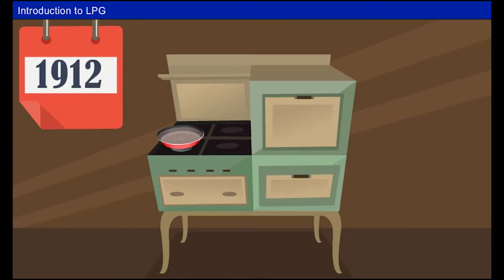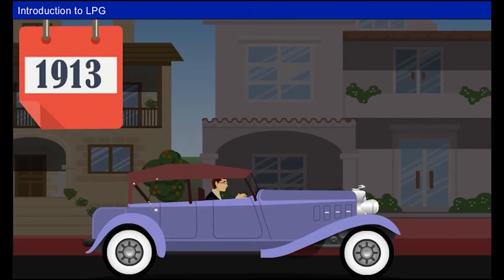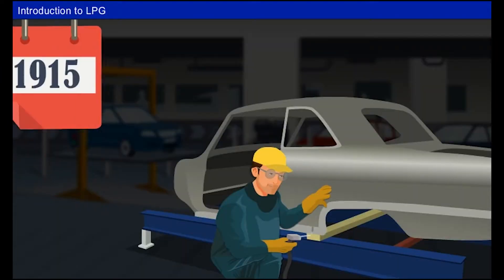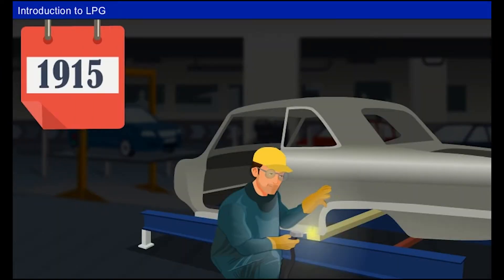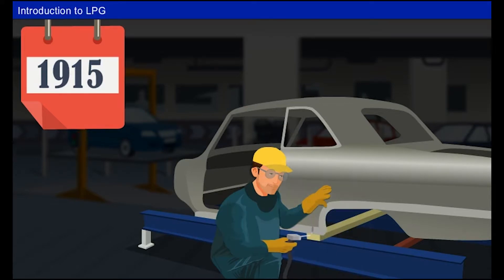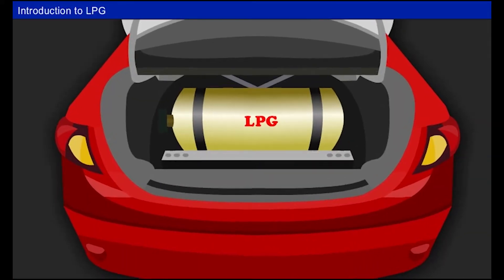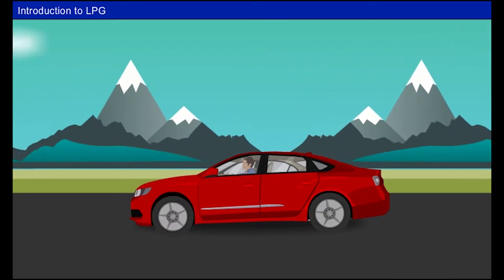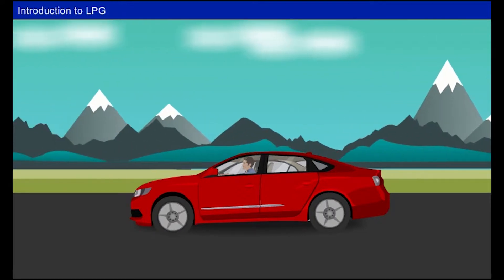By 1912, LPG was used in cooking food in the home. The first car powered by LPG ran in 1913. By 1915, people were using propane in torches to cut through metal. LPG has been used as a transportation fuel, mainly in heavy trucks and forklift vehicles around the world for more than 60 years.